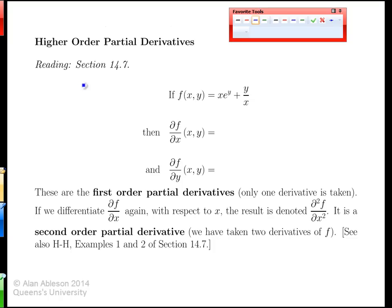We now introduce a separate topic from the earlier chain rule. Now we're going to take multiple derivatives, but derivatives of the same variables. So now we're strictly back to x and y dictating some output function f, and there's nothing acting as an input to x and y themselves.